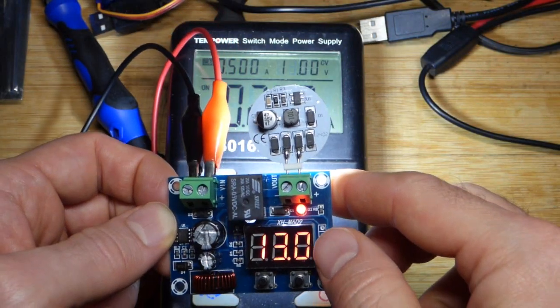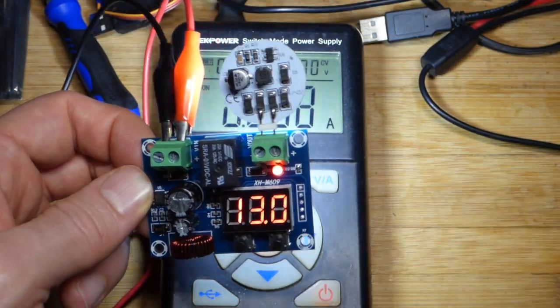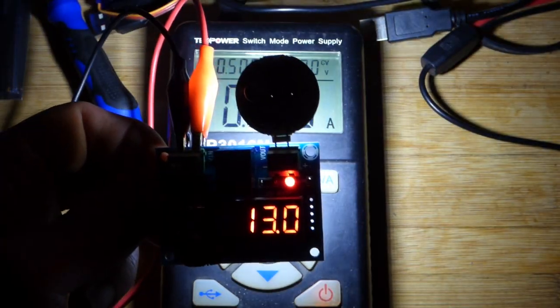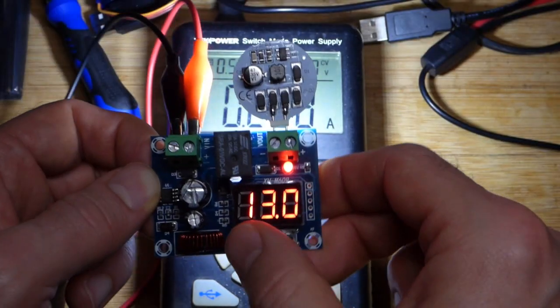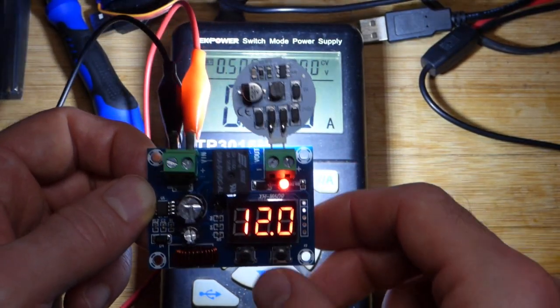Now we're going to take a quick look at this low voltage cutoff module. Not sure how well the light's going to work on that, but we have this set to 12 volts.